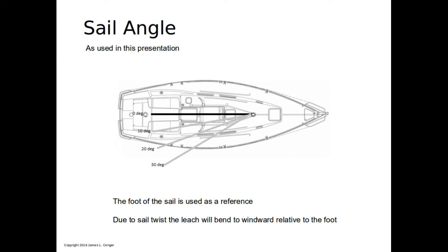One other convention used in this presentation is that when we refer to the angle of the sail, we're referring to the foot of the sail relative to the centerline of the boat. Of course, sails aren't rigid, so if you sheet the mainsail right down the centerline, the majority of the sail will of course bend to windward, and you'll see that particularly in the 2D simulations.